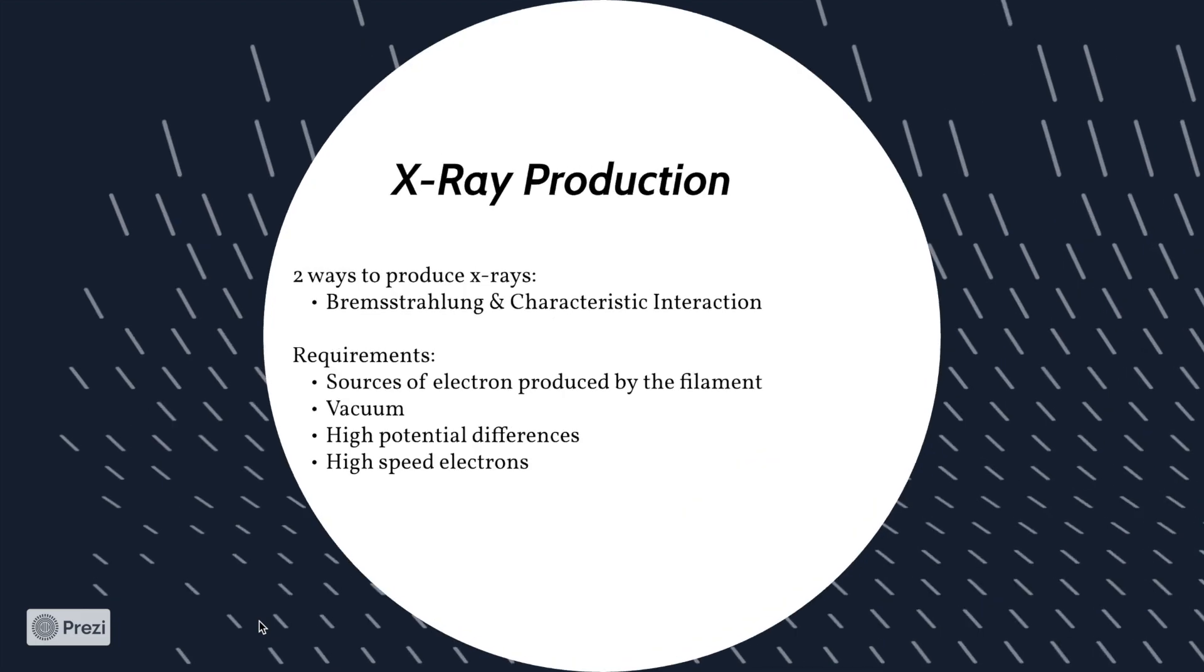There are two ways to produce x-rays: Bremsstrahlung and characteristic interaction. The requirements to produce x-rays are sources of electrons produced by the filament, which is made of tungsten with a high atomic number of 74,